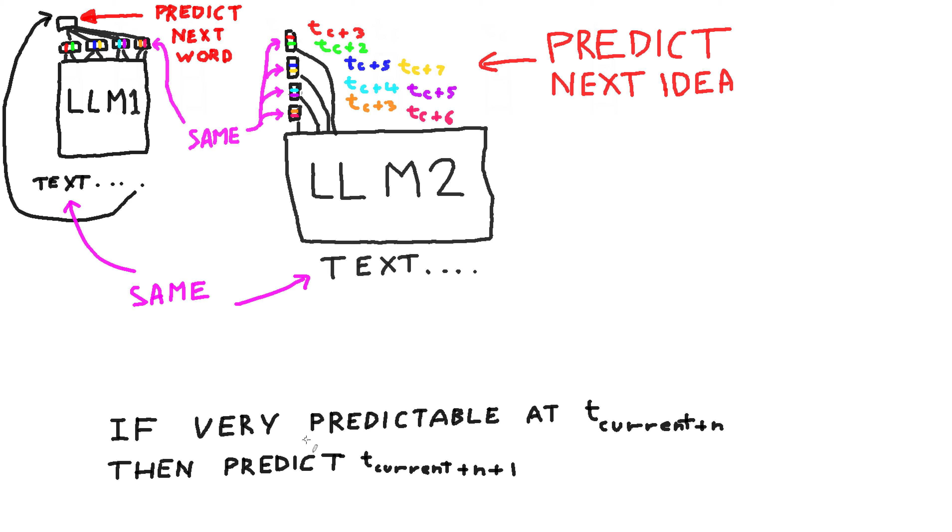So again, this is right here: if very predictable at some time t current, if the bit is very predictable, idea bit is very predictable at some time t current plus n, then we try to predict time t current n plus one. So one more ahead of whatever was very predictable. So that's the general idea.